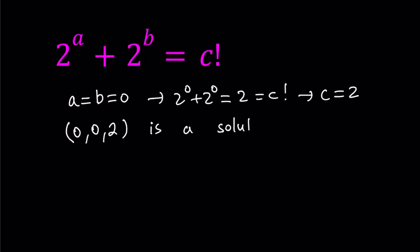It's easy to see that solution. Now, you can try different values. It would probably be easier to start with c values. For example, for c equals 2 we got a solution. How about smaller c values? Do we have a solution for c equals 0? Well, since we're looking for non-negative integer solutions, we should test c equals 0.